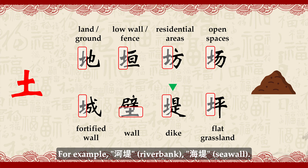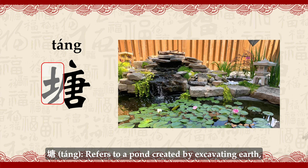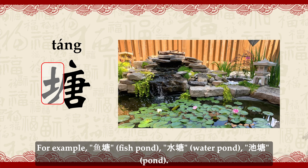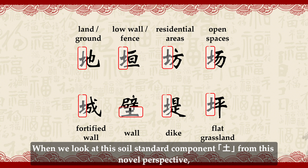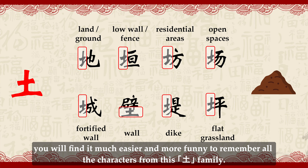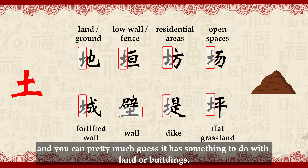Chéng (城) referred to fortified walls around the city and, by extension, the city itself — for example, Chéngshì (city) or Chéngqiáng (city wall). Bì (壁), especially a thick or sturdy wall. Dī (堤) referred to an elevated earth or stone structure built along a riverbank to prevent flooding — for example, Hédī (river bank) or Hǎidī (sea wall). Píng (坪) refers to a flat grassland or plateau. Táng (塘) refers to a pond created by excavating earth, often used for fish farming or irrigation — for example, Yútáng (fish pond), Shuǐtáng (water pond), or Chítáng (pond). From now on, whenever you see a character with this earth or soil standard component, you can pretty much guess it has something to do with land or buildings.